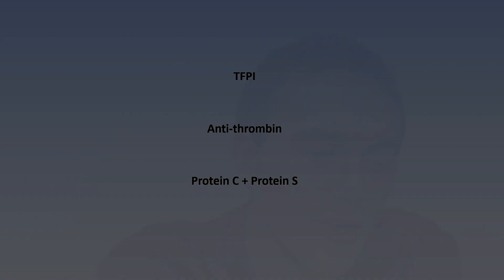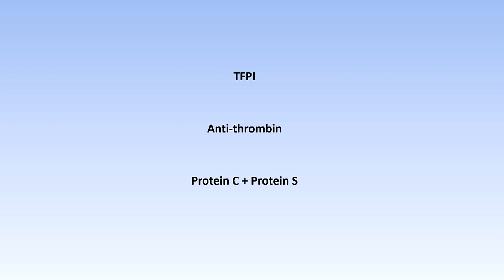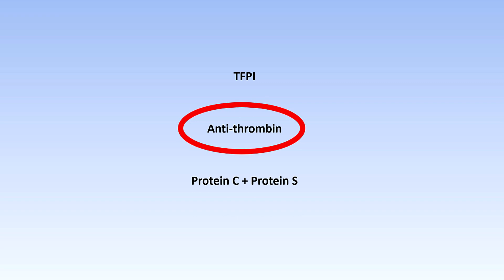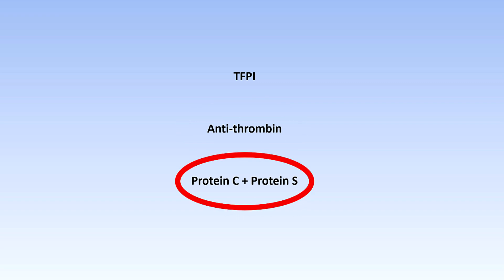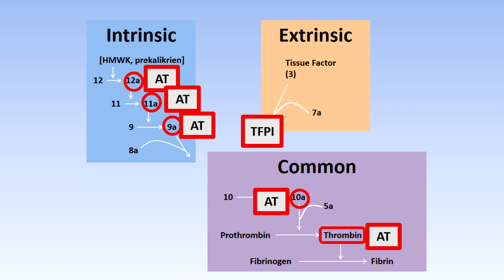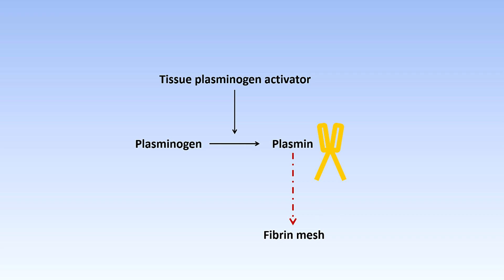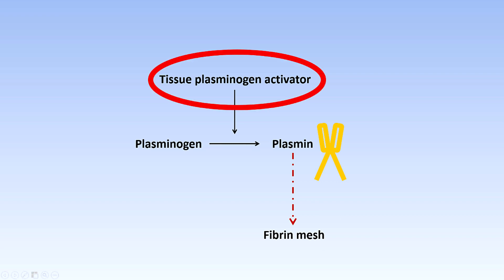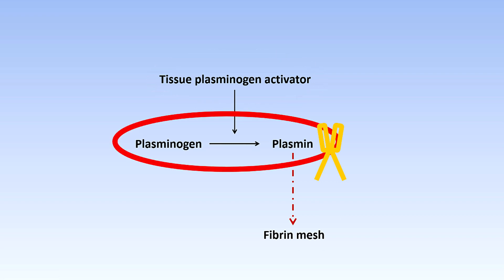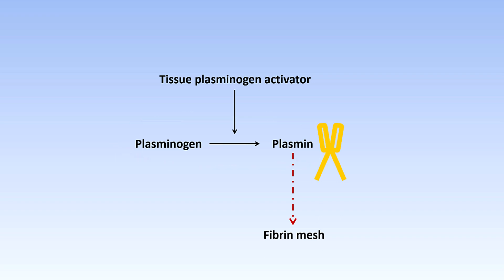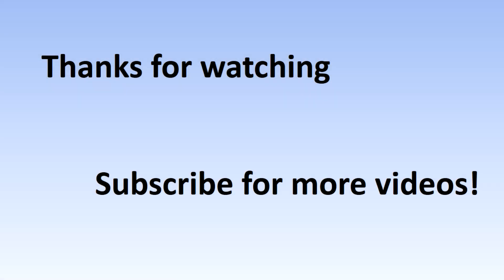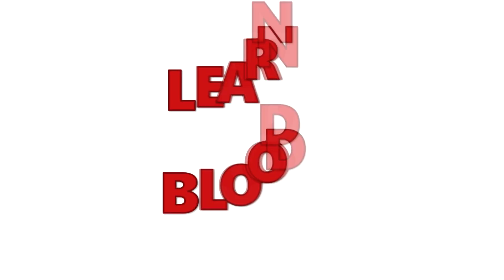In summary, the factors that are important for stopping coagulation from progressing too far are tissue factor pathway inhibitor, antithrombin, and proteins C and S. The most important elements for fibrinolysis — the breaking down of an established fibrin mesh in a clot — are tissue plasminogen activator and plasminogen, of which the active form is called plasmin.